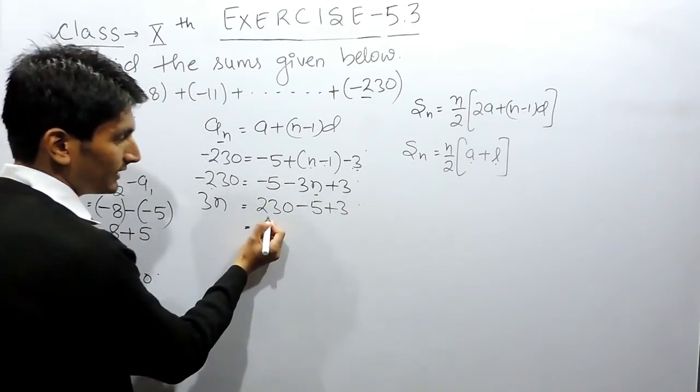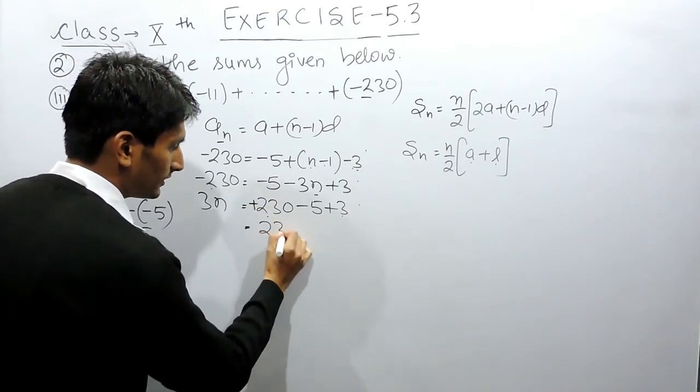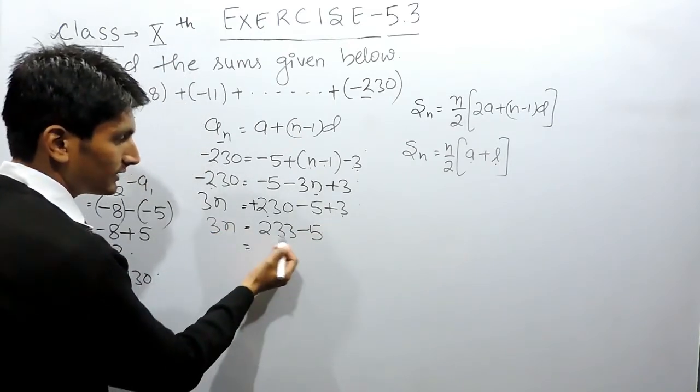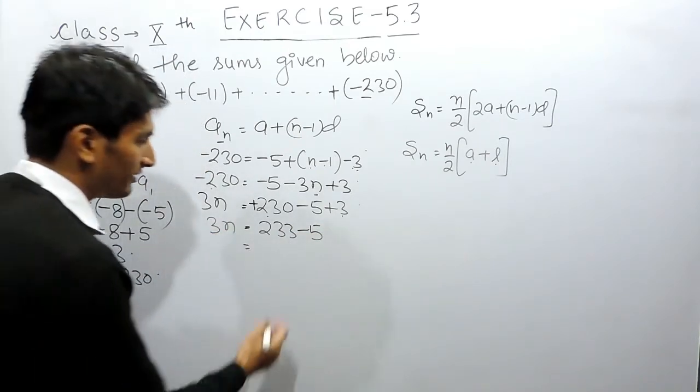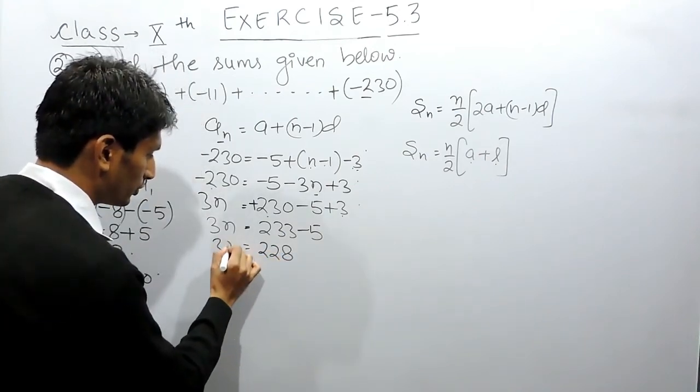Now you have to solve this. This is a plus sign value and this is also a plus sign value. Further solving this, 233 minus 5 will be 228, and this equals 3n.